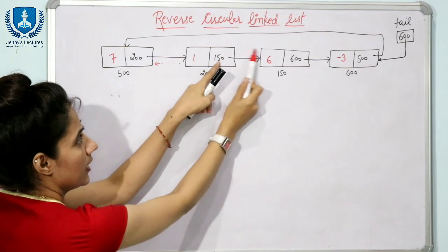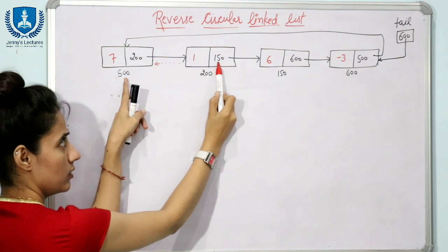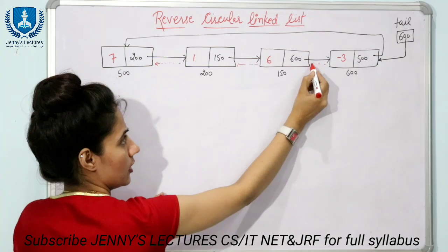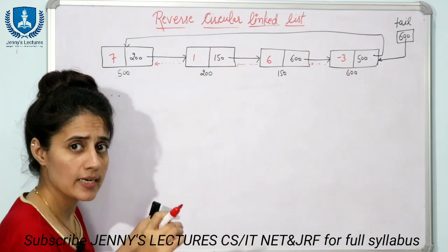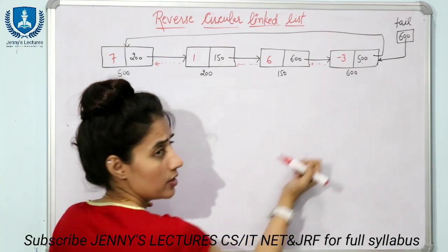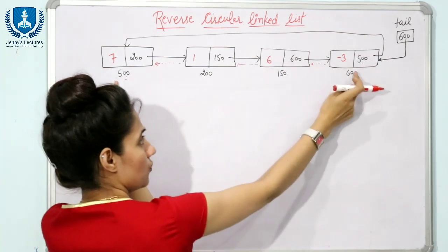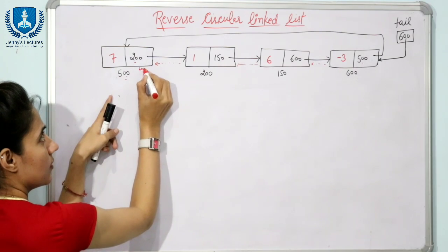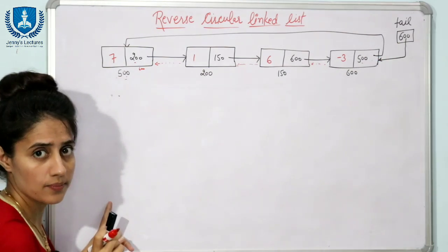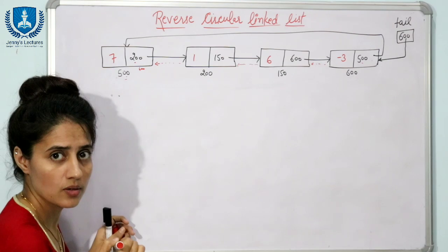For example, this node is currently containing the address of the next node (150), but after reversing it should contain the address of the previous node (500). We are going to reverse all the links. The last node currently contains the address of the first node, and after reversing, that link is also reversed. After reversing, tail would point to the new last node, and when we display the list it should print: -3, 6, 1, and 7.